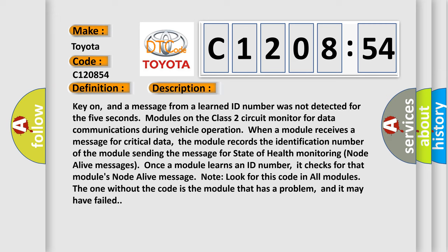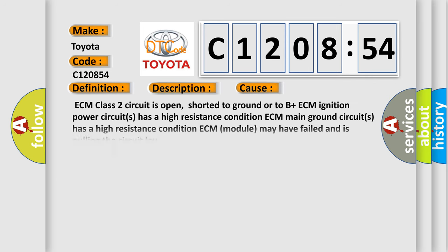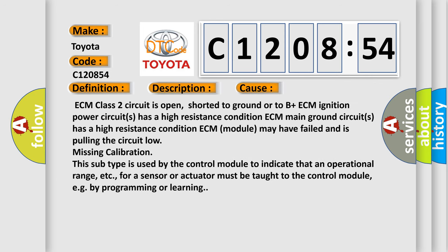This diagnostic error occurs most often in these cases: ECM class 2 circuit is open, shorted to ground or to B+ ECM. Ignition power circuits has a high resistance condition. ECM main ground circuits has a high resistance condition. ECM module may have failed and is pulling the circuit low. Missing calibration.